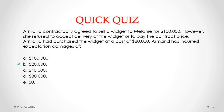The answer here is B, $20,000. We get to $20,000 by calculating expectation damages as equal to expected benefits minus expected costs. The expected benefit that Armand expected to receive if the contract had been performed would have been $100,000 from Melanie. His expected costs were $80,000 — the widget cost him $80,000. So it's $100,000 minus $80,000, which gives us $20,000.